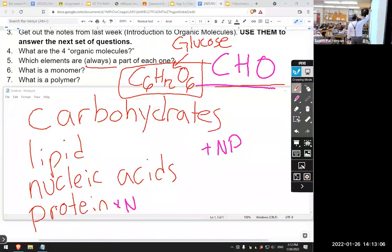We're on bellwork question number five. We just did number four, the four organic molecules: carbohydrates, lipids, nucleic acids, and proteins. Number five, Team CHO - carbon, hydrogen, oxygen - always a part of all of them. Now we're caught up.